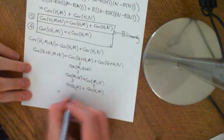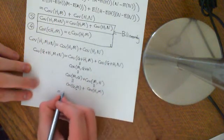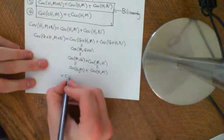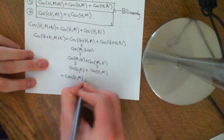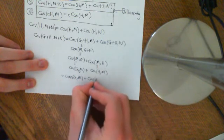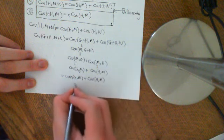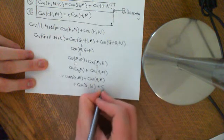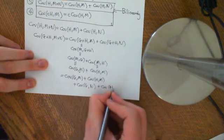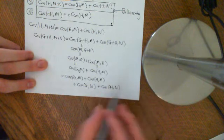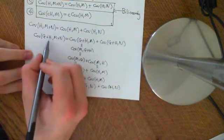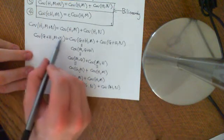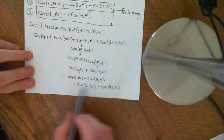If I want to expand this in total, it gives me the covariance of g with m plus the covariance of h with m, plus the covariance of g with n plus the covariance of h with n. So it distributes in both arguments — it's almost like multiplying out polynomials where you get every possible combination.